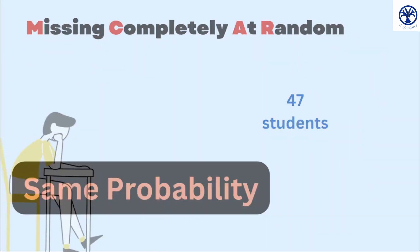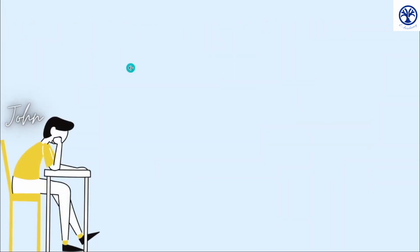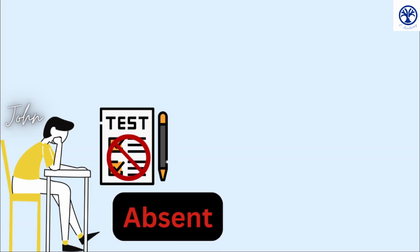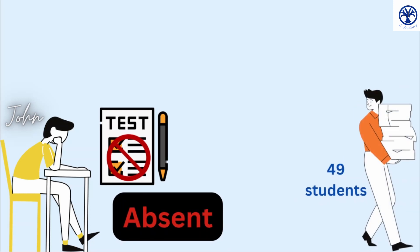Moving on, let's consider a student named John who didn't give the test because he was absent on the day when the particular topic was being covered. The teacher now has 49 tests out of 50.